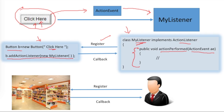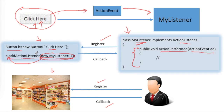Here is an analogy from my previous video: a store may organize an event like a discount sale, and they will inform only the customers who are already registered — those who are members or regular customers who have given their phone number and details to the store. Whenever there is an event, the store calls those people to inform them — that is a callback. Similarly, MyListener has registered with the button, saying that whenever the button is clicked, call me — so whenever the button is clicked, the actionPerformed function will be called.